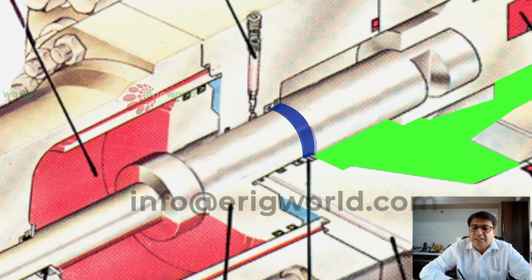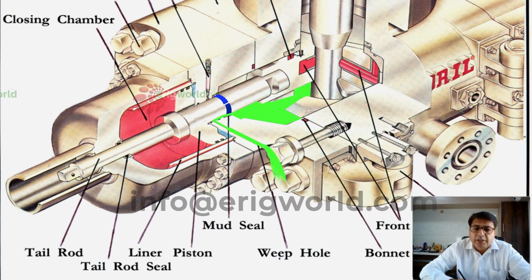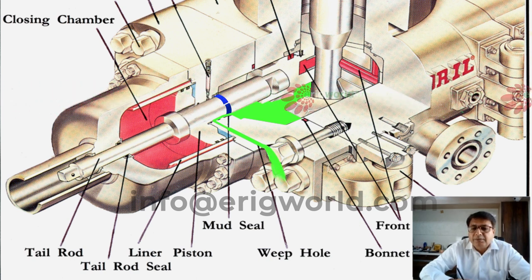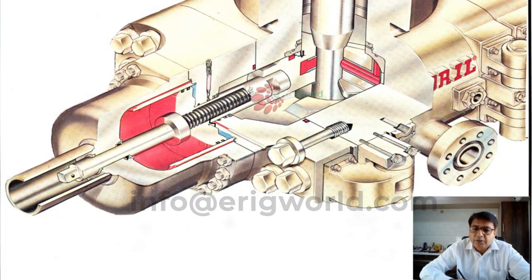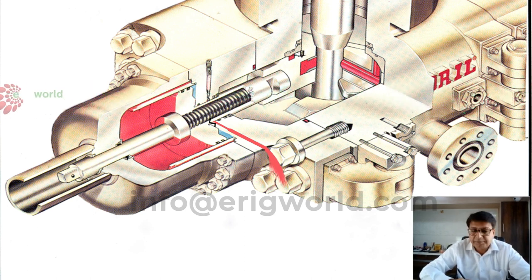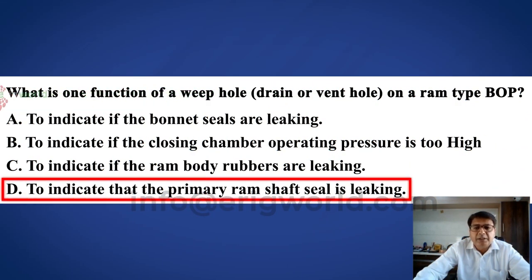Now if the seal is leaking, the wellbore fluid will come out through the weephole. The weephole will always indicate a problem — if you see mud or brine coming out of the weephole, this means the primary ram shaft seal is leaking. But if you see hydraulic fluid coming out of the weephole, then the opening chamber seal is leaking. So the answer is: the weephole indicates that the primary ram shaft seal is leaking.